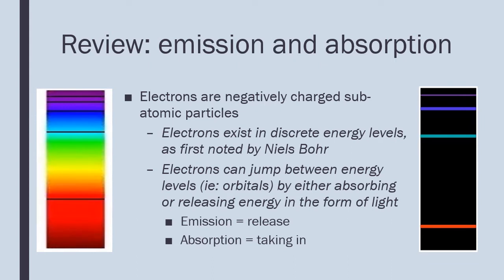Electrons exist in discrete energy levels. Electrons are able to move between these energy levels by either absorbing or releasing energy. This energy is absorbed or released in the form of light. When it is released, emission spectra are produced. When it is absorbed, absorption spectra are produced.